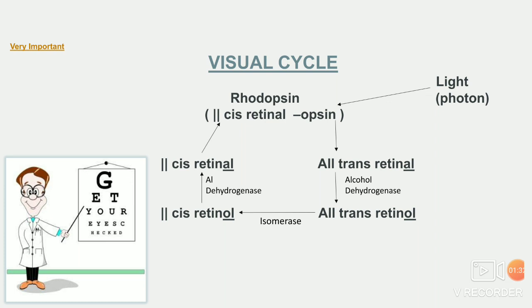Rhodopsin gets converted into all-trans retinal. All-trans retinal will then be converted into all-trans retinol by the help of alcohol dehydrogenase enzyme. Then with the help of isomerase enzyme, all-trans retinol will be converted into 11-cis retinol, and this retinol will then be converted into 11-cis retinal — that is rhodopsin — with the help of alcohol dehydrogenase. And so your visual cycle is a continuous process.